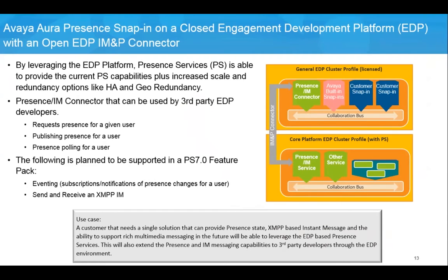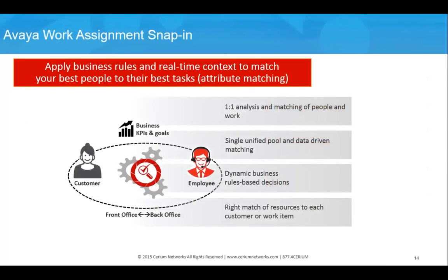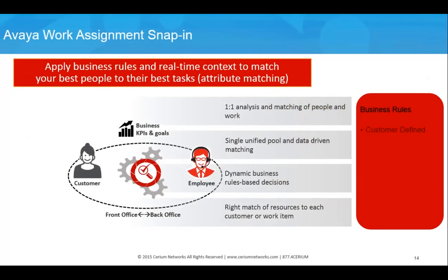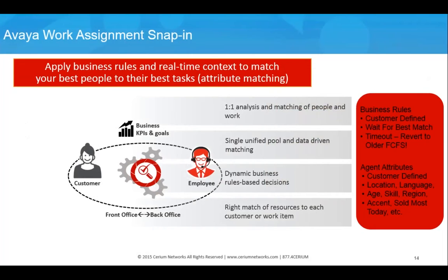In Avaya Aura 7, presence services has moved away from being an independent application and is now a snap-in in the Engagement Development Platform, allowing Avaya Aura presence and instant messaging to scale more efficiently and expose these services to third-party applications. The Avaya Work Assignment snap-in is a contact center-focused solution that allows enterprises to apply business rules and real-time context to match agent skills and capabilities against customer parameters, with the goals of reducing cost, enhancing revenue, and improving customer satisfaction.